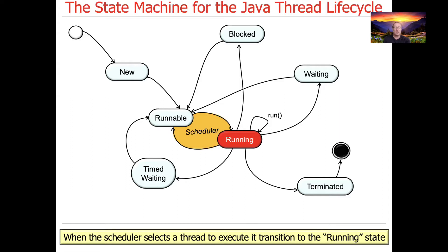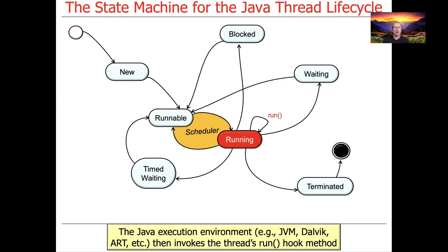When the scheduler selects a thread to execute, it will transition to the running state and call the run hook method. The run hook method is where the business logic goes — whatever the thread has been set up to do. This is typically invoked by the Java execution environment, the Java virtual machine, the Dalvik interpreter, the ART Android runtime, etc. When the run hook method gets called back, then interesting things happen that will also have effects on the thread states.